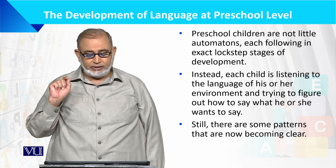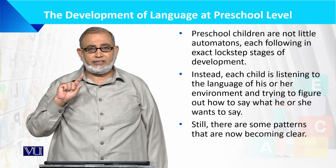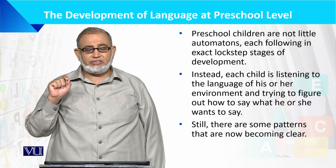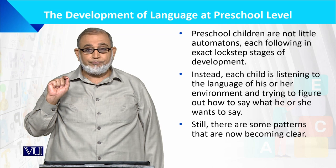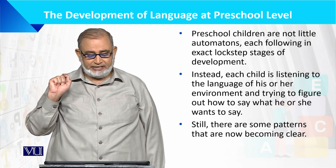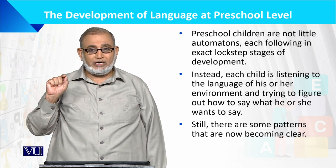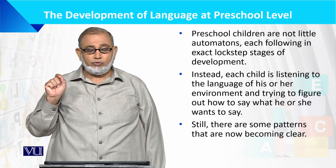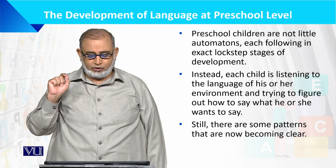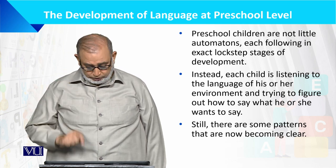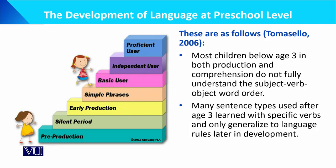Each child is listening to the language of his or her environment, because it is the most important thing about the environment and their caregivers. They are listening to language development. Still, there are some patterns that are becoming clear. Most children below the age of 3, in both production and comprehension, do not fully understand subject, verb, object order.